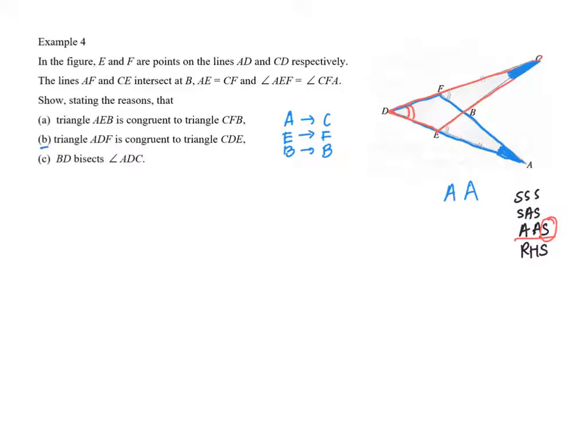Now, what are the sides? What can I have? I know that AE is equal to BE. Let's take a look. I know that AE, but AE is not inside the triangle, it's outside the red color triangle.